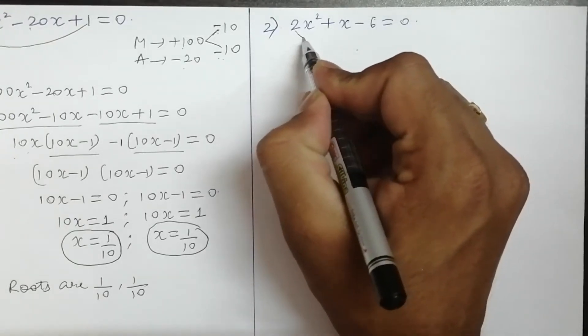So: (x + √2)(√2·x + 5) = 0. Equating each bracket to zero: x + √2 = 0 gives x = -√2, and √2·x + 5 = 0 gives √2·x = -5, so x = -5/√2. Therefore the roots are -√2 and -5/√2.